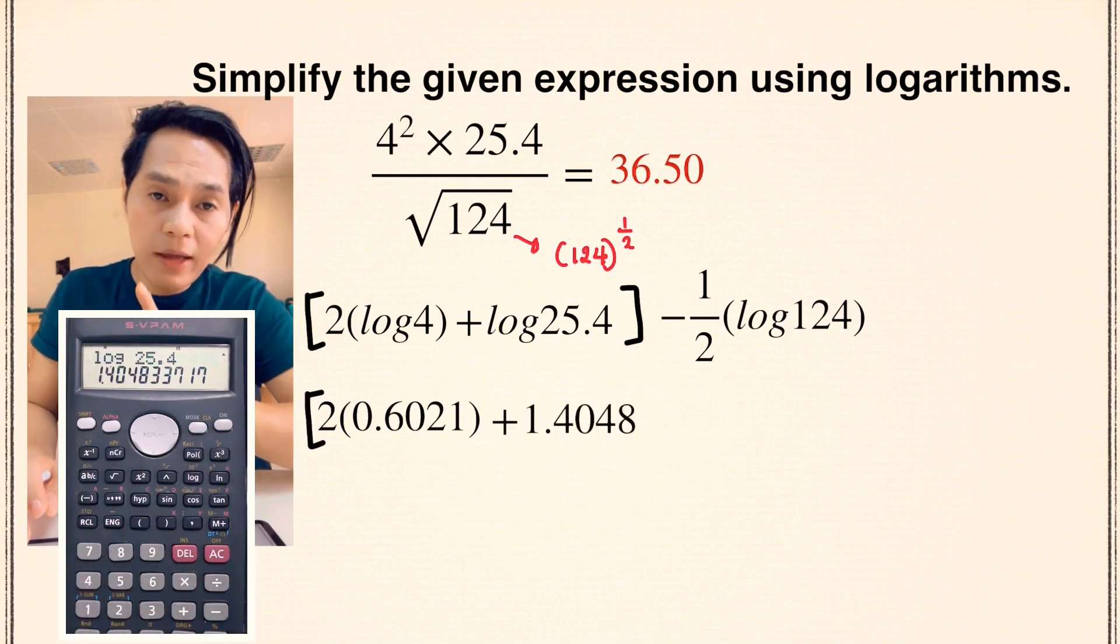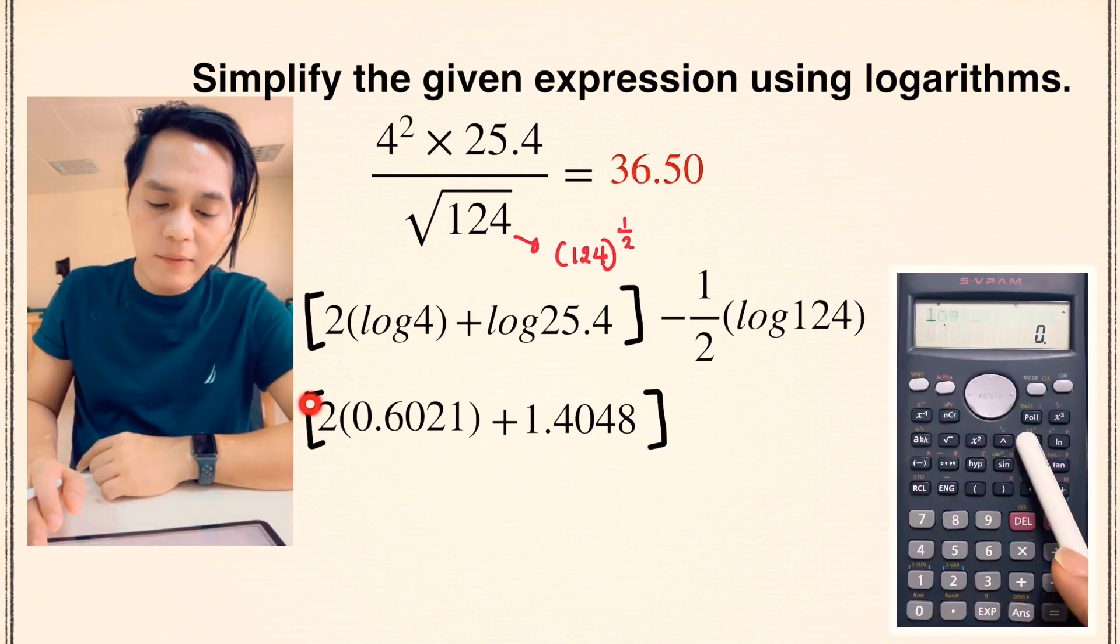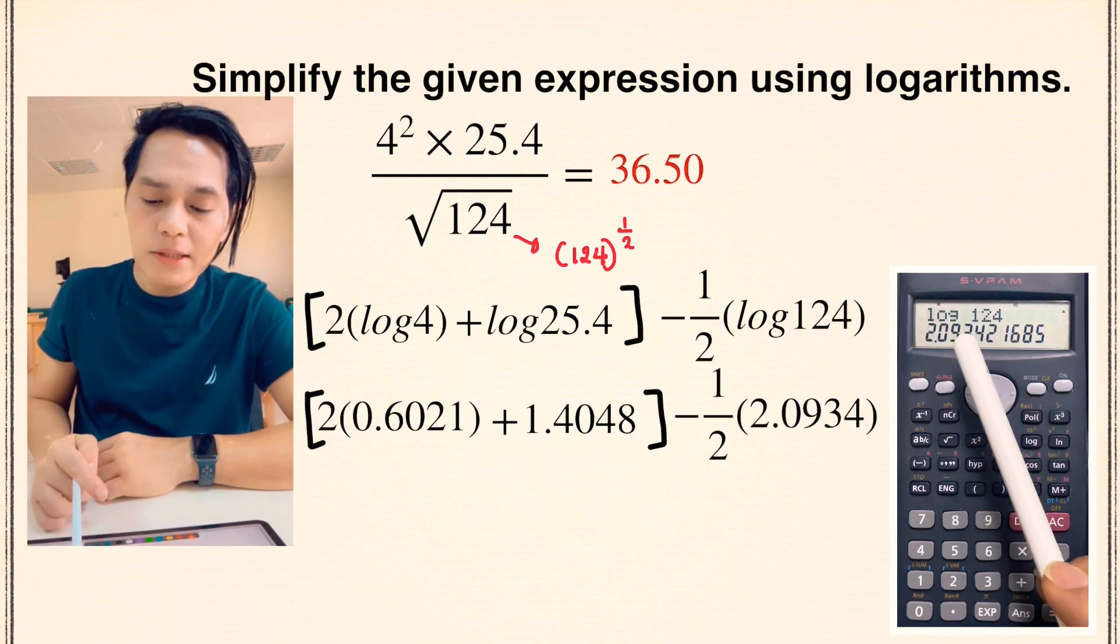We have to observe 4 decimal places and then we have to group that one together. And on the other side, the log of 124 is 2.0934.